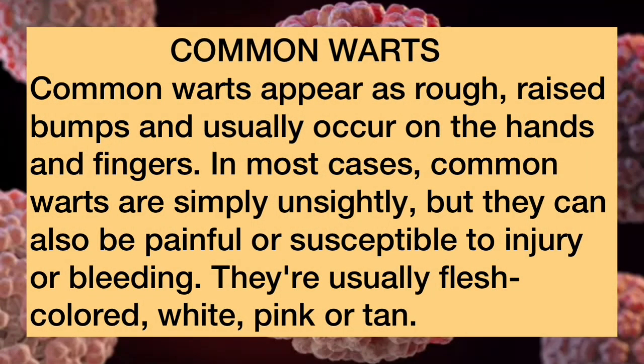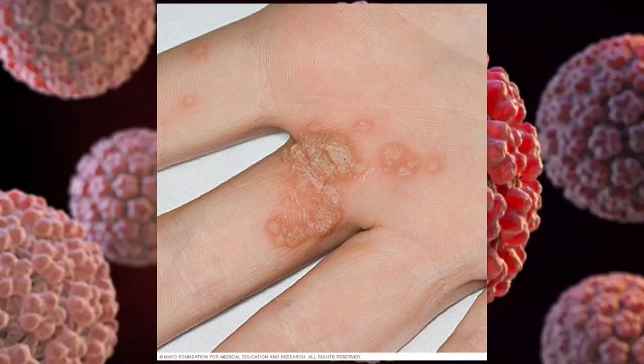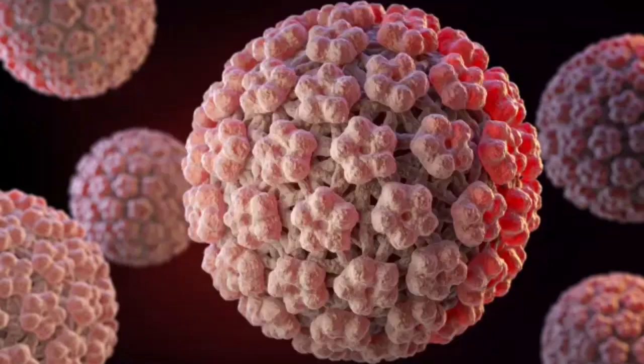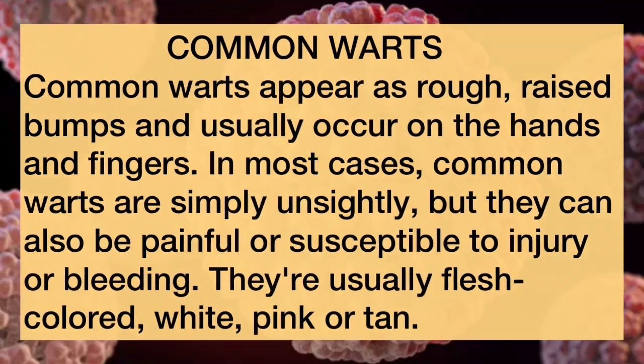Common warts appear as rough, raised bumps and usually occur on the hands and fingers. In most cases, common warts are simply unsightly, but they can also be painful or susceptible to injury or bleeding. They are usually flesh-colored, white, pink, or tan.